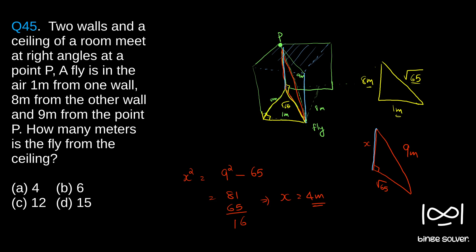The solution to question 45 is 4 meters. This is a straightforward question, but you need to visualize the 3D setup, draw the proper triangles, and apply the Pythagorean theorem — c squared equals a squared plus b squared. Many questions use Pythagorean theorem but are worded in a unique or difficult manner, so understanding how to draw the right figures is key.